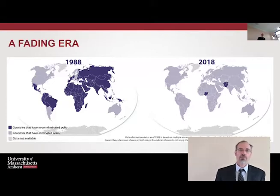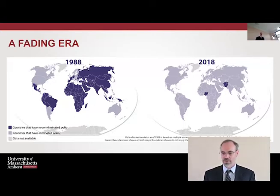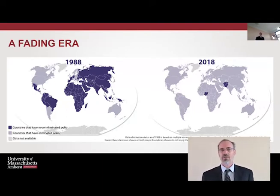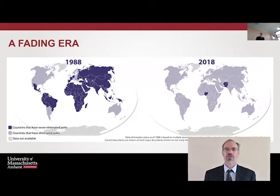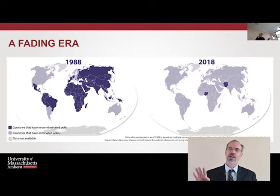We also have a fading area of polio, as we can see in this figure. Whereas in 1988 polio cases were still happening all around the world, throughout the Asian continent, even in Western Europe, and down through South America and Mexico, now in 2018 we really only see it in two different regions of the world: northern Nigeria and Afghanistan-Pakistan. There have been some reports of sporadic cases in the Philippines recently. The point is that these diseases were once all around the world but have been fading away from life in most places.